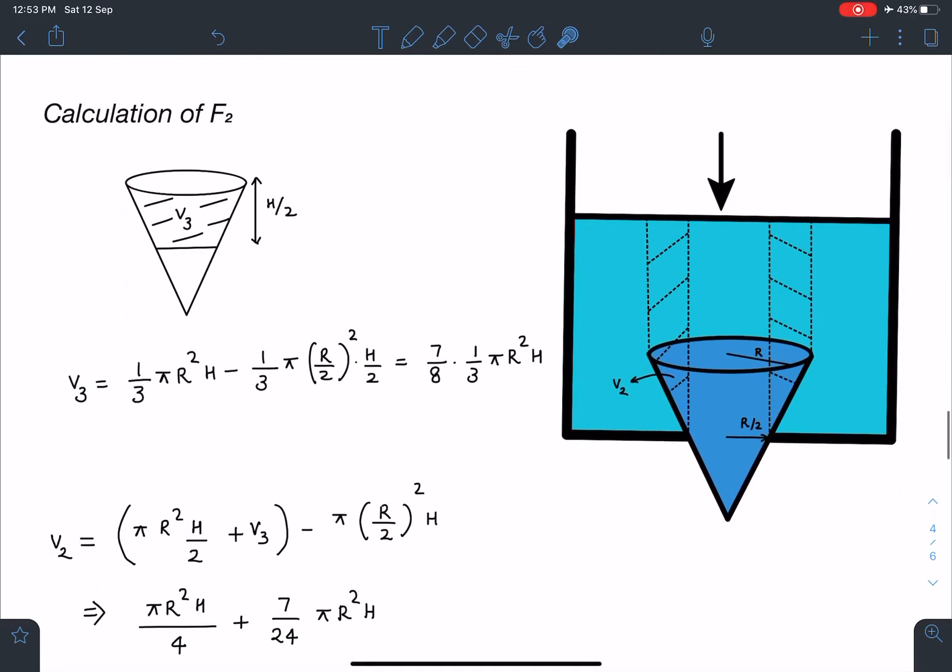Similarly, I can do the calculation for F2. F2 is corresponding to this force which is acting here and its vertical component. So that is going to be nothing but corresponding to this much volume, and it will be in cylindrical form actually. So this much volume I have to find out, and then I can say this volume here and here, its weight that will be the value of this F2.